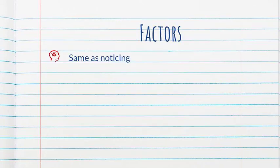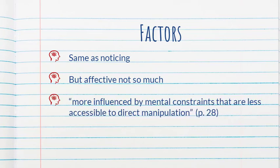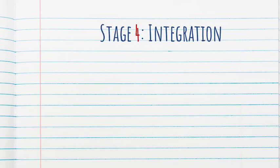What factors affect intake? Many of the same as for noticing. But this time the author makes one distinction, and it is that perhaps affective factors may not influence intake that much. And that is because intake tends to be more influenced by mental constraints that are less accessible to direct manipulation. So we might be able to create the right conditions for processing and intake, but we cannot control it or guarantee it. But wait, there's more.